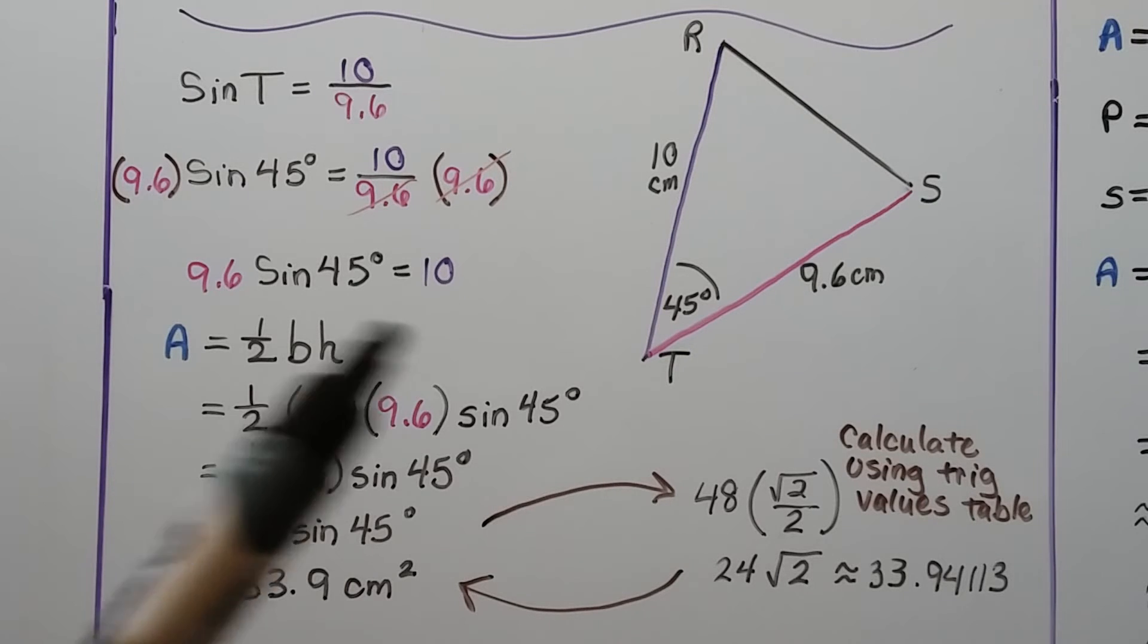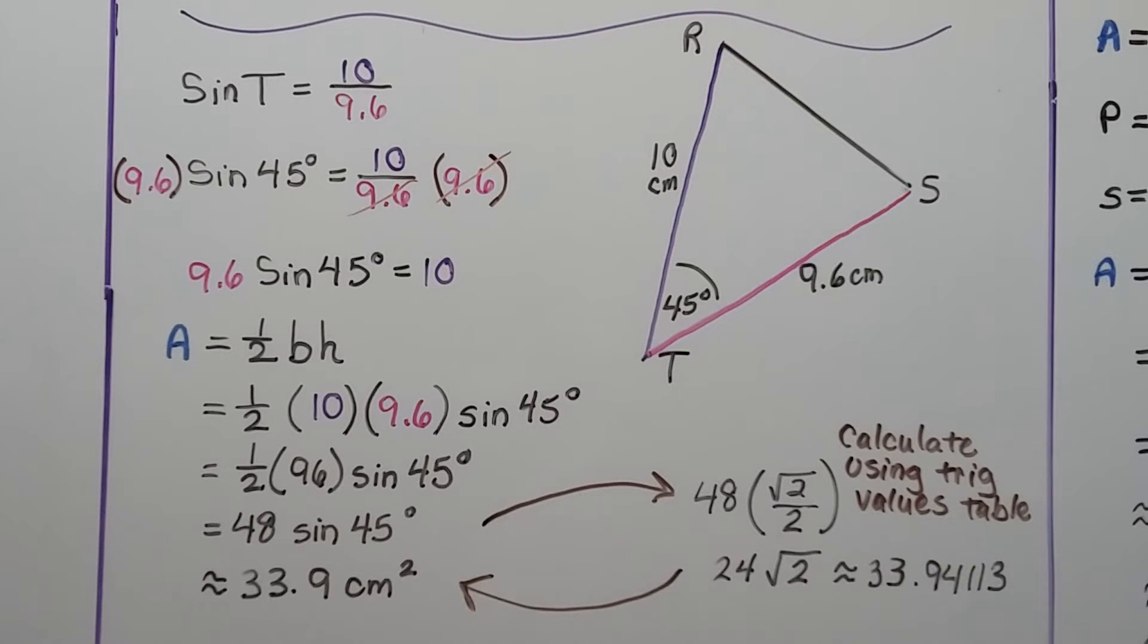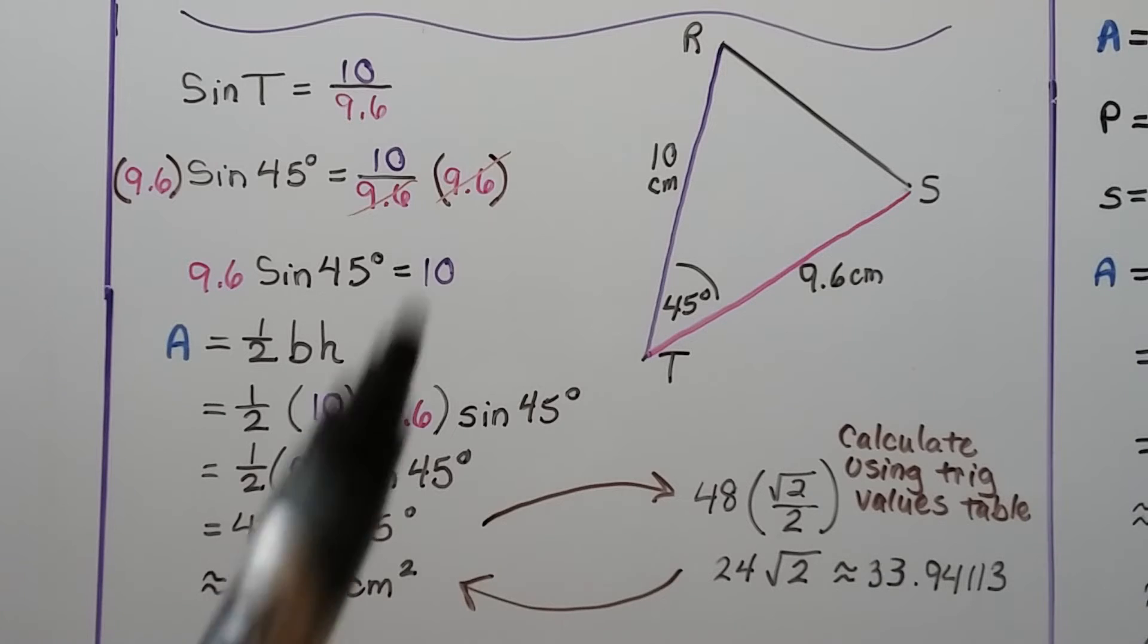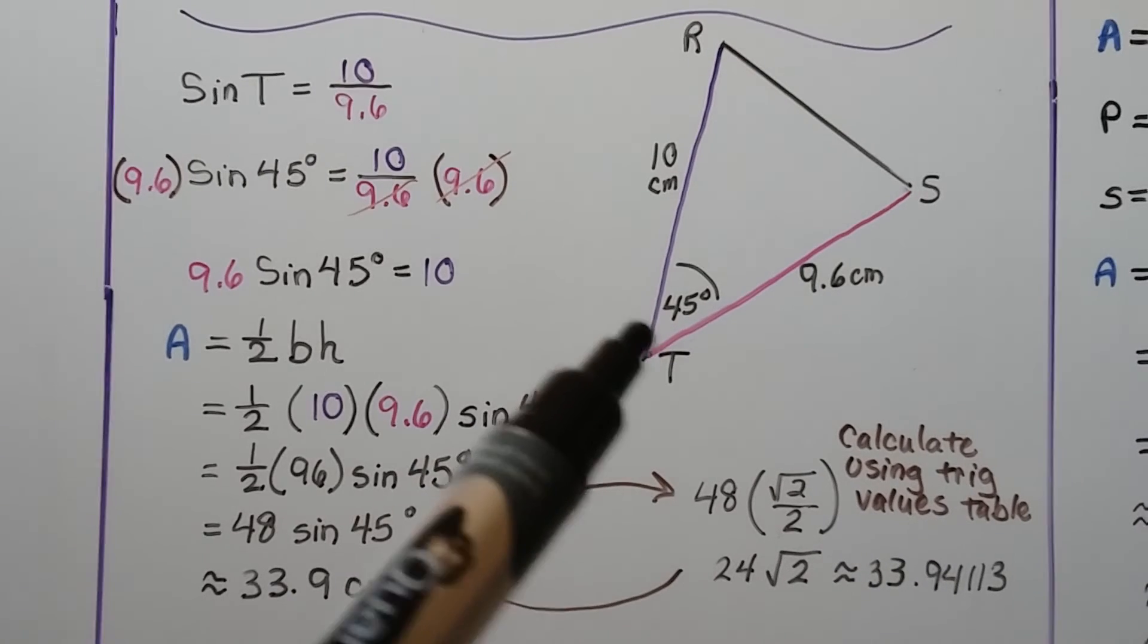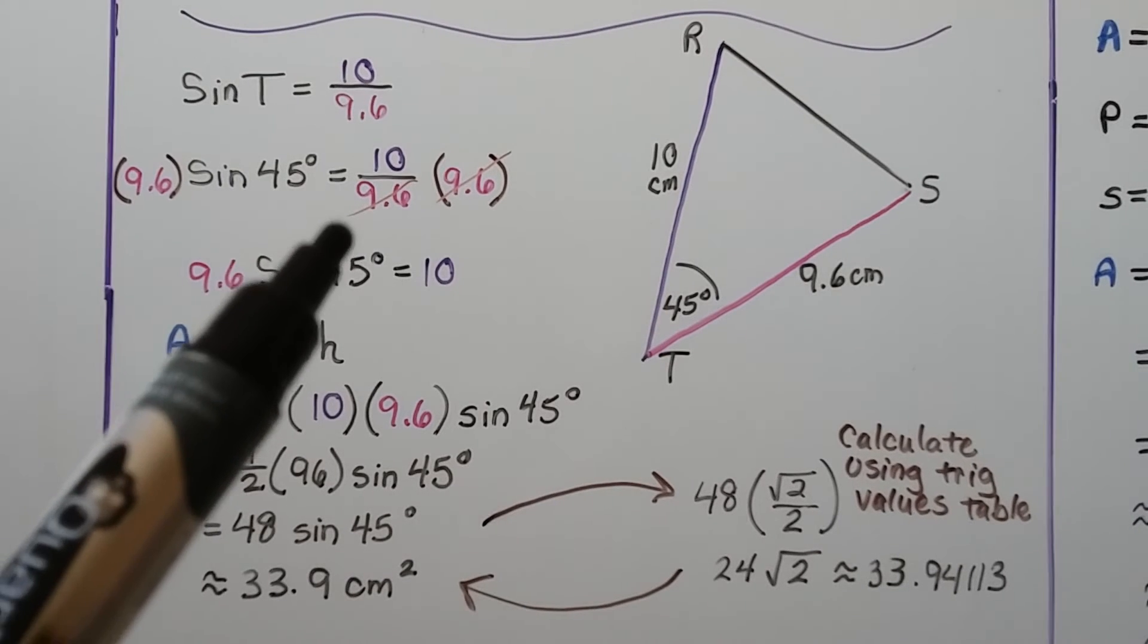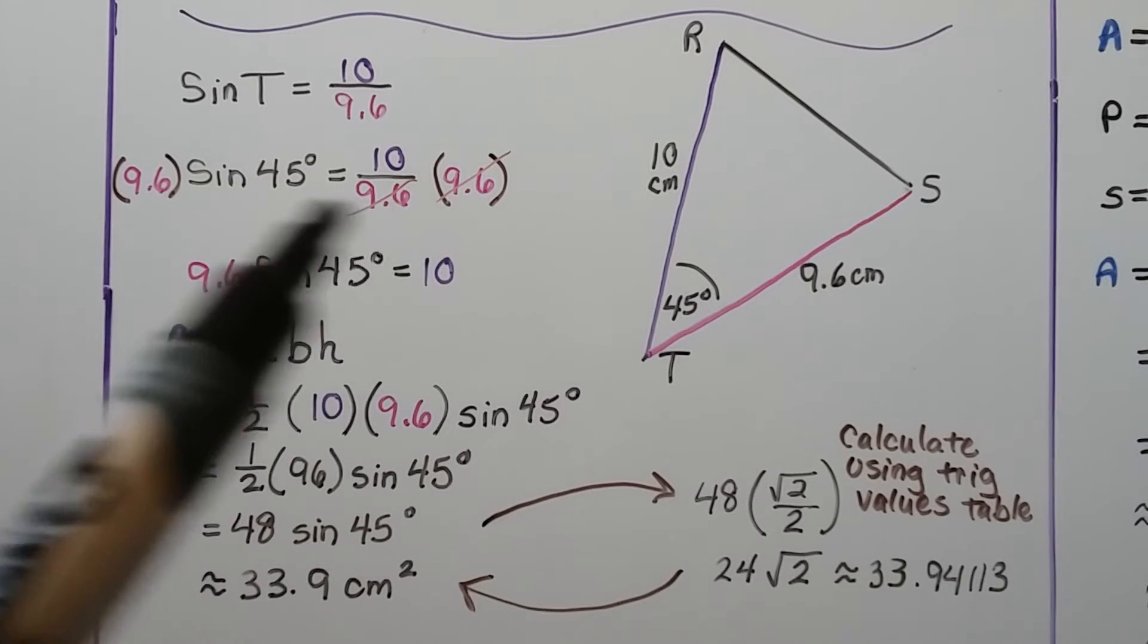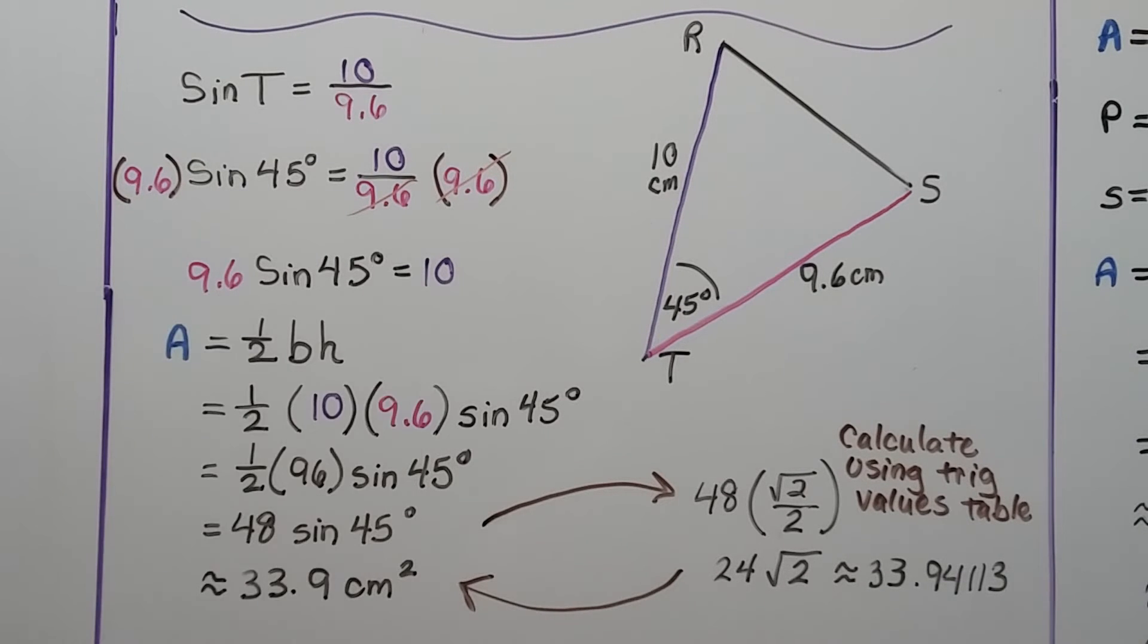We can use this triangle. We've got two sides and an included angle. So the sine of t would be 10 over 9.6. And the sine of t would be 45 degrees. We have sine of 45 degrees is equal to 10 over 9.6. We multiply both sides by 9.6, and we get 9.6 times the sine of 45 degrees equals 10.